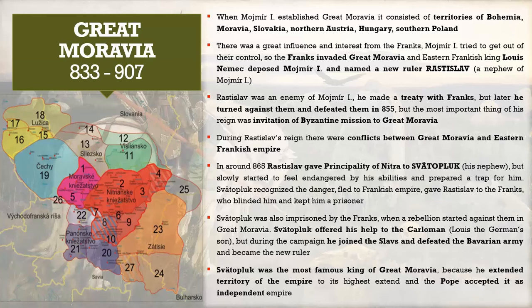Around 865, Rastislav gave the Principality of Nitra — modern-day Slovakia — to Svätopluk, who was his nephew. This mirrors the situation of Mojmír the First and Rastislav. Rastislav feared Svätopluk's abilities and prepared a trap for him, but Svätopluk recognized the danger and fled to the Frankish Empire, making allies of the Franks once again.